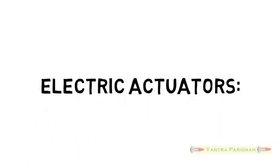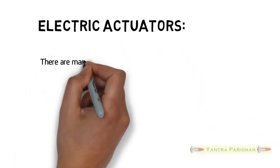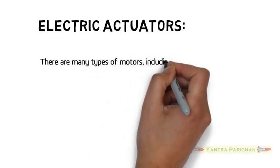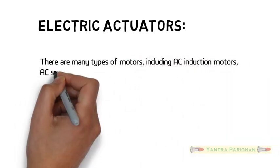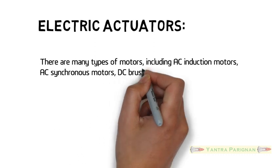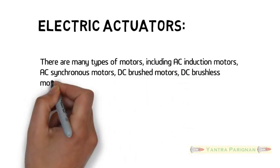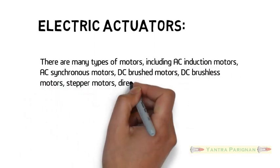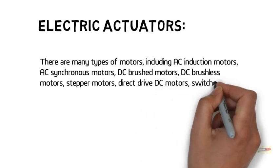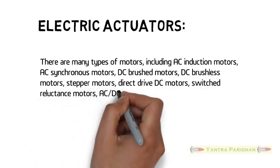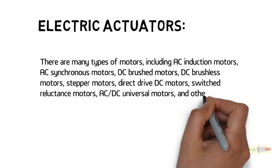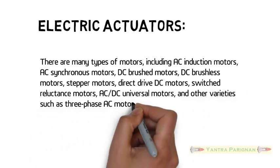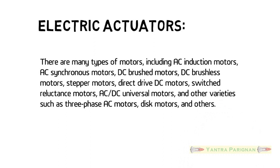Electric actuators. There are many types of motors including AC induction motors, AC synchronous motors, DC brushed motors, DC brushless motors, stepper motors, direct drive DC motors, switched reluctance motors, AC-DC universal motors, and other varieties such as three-phase AC motors, disc motors, and others.